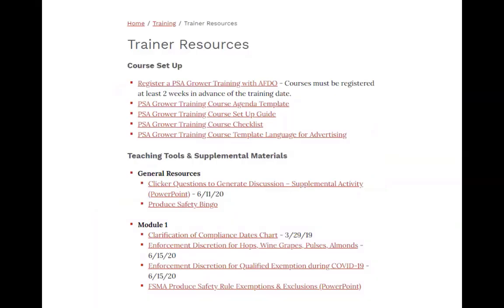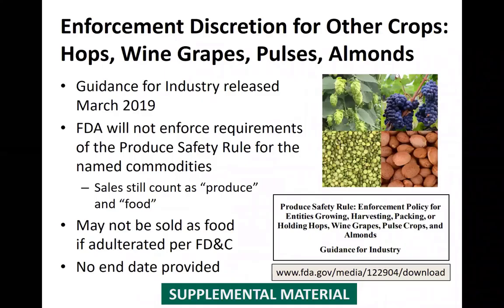We have a supplemental slide describing the enforcement discretion for hops, wine grapes, pulses, and almonds — available on our trainer resources web page. Depending on the crops grown in your area, you may want to include this supplemental slide after slide 7.